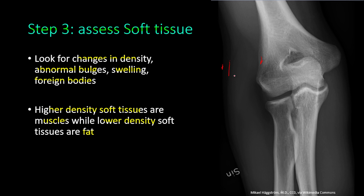On this AP elbow x-ray, the soft tissue is between the bones and the skin. A line is visible between the muscles, which have higher density and appear more white, and the fat and skin which have lower density and appear more black. Another line represents the area between two muscles with fat between them, and there is also some fat near the joint.